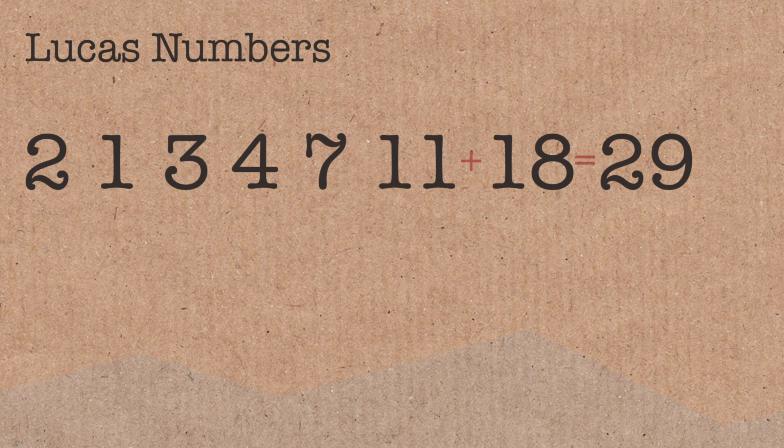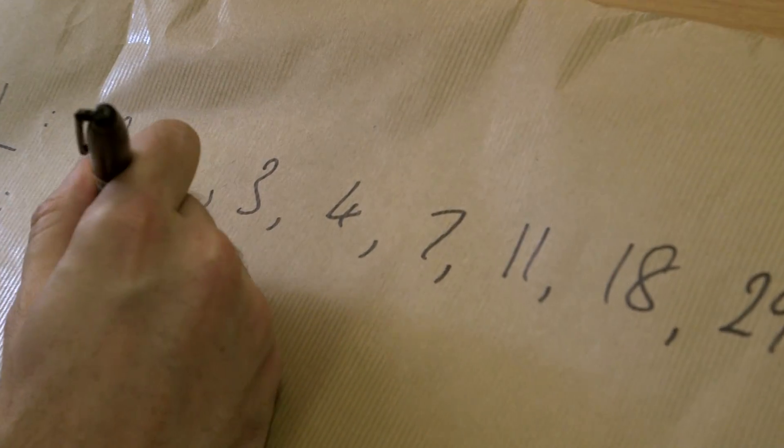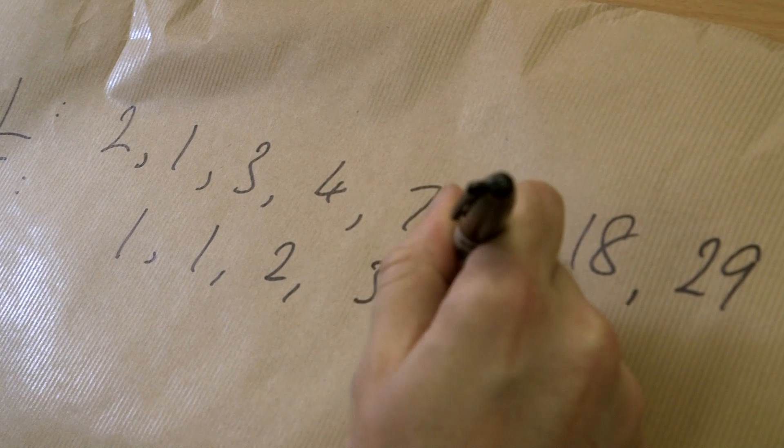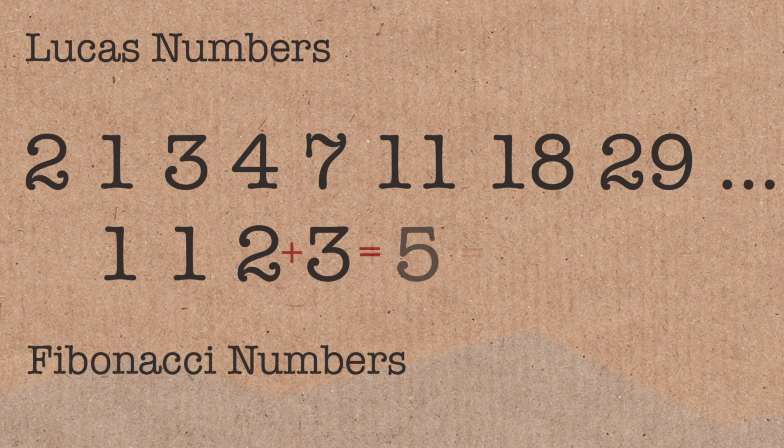Okay, and then the Fibonacci numbers, which everyone already knows and loves. If you line them up here, instead of going 1, 3, you can think of Fibonacci as the 1, 1, and then you get 2, 3, 5, 8, and so on, 13.